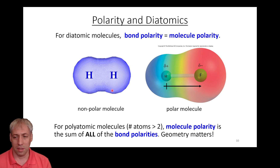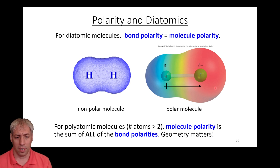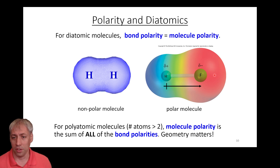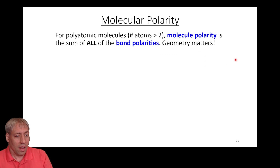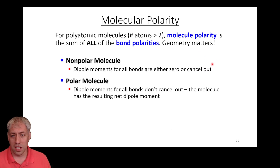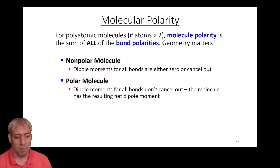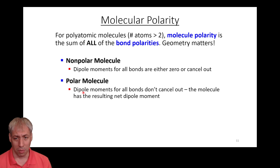These are simple two-atom examples. The rule is: if the two atoms are the same, it's nonpolar; if they're different, it's going to be polar. What happens when we get to more complex systems with more than two atoms? We have multiple vectors and need to consider how those sum together. For nonpolar molecules, the dipole moments for all the bonds are either zero or they cancel out. For a polar molecule, the dipole moments don't cancel out and the molecule has overall polarity.